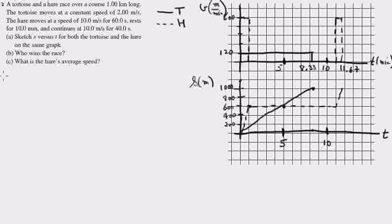So the first thing I do is I convert all the speeds from meters per second to meters per minute. The tortoise has a constant speed during the whole race of 2 meters per second, and I want to convert that to meters per minute. I'm going to multiply by 60 seconds over 1 minute.